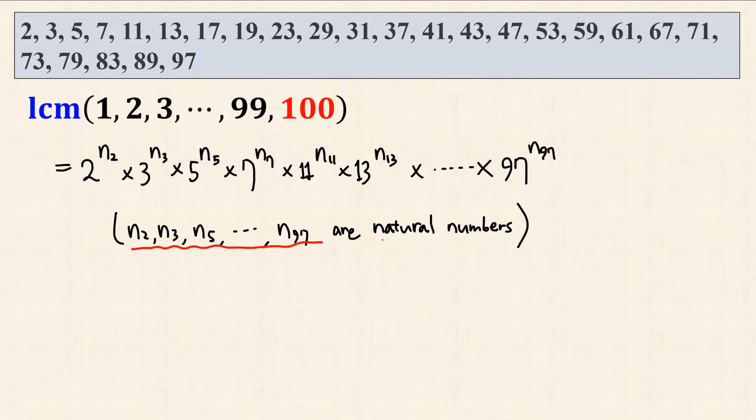All of these exponents are natural numbers, of course. Here, prime factors that are greater than 10 cannot have the exponents greater than or equal to 2, since 11 square is already 121,